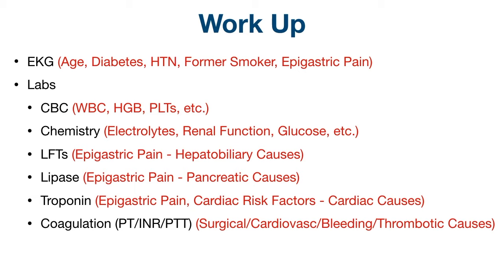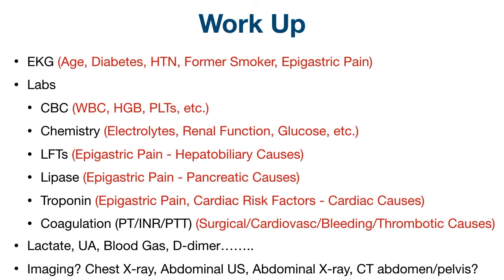These are the main labs to consider, but there can be others — for example, you may have thought of lactate, urinalysis, blood gas, or D-dimer. For imaging, you could consider a chest x-ray as part of the cardiac workup given his presentation, increased respiratory rate, and the cardiac reasons mentioned for the EKG and troponin. You could also consider a quick bedside ultrasound if concerned for a triple-A. An abdominal x-ray or CT abdomen and pelvis are probably not necessary at this time, especially given his very benign abdominal exam, but remember you can always adjust the plan as you get more information.